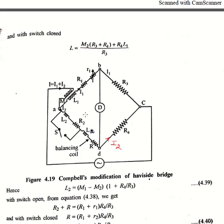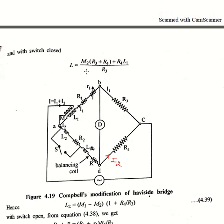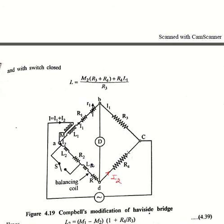Looking at the modification to the Heavyside bridge, this is our Campbell's AC bridge. Here we have taken L and R as a balancing coil — this L and R will be reduced in our equation. This small r is used as a variable. We are going to vary our AC bridge by varying the mutual inductance M. We will take two cases for finding the equations: first, the case in which the switch is open, and second, in which the switch is closed. This circuit has L and R in series with L2 and R2, which is to be determined, and small r is in branch AB.